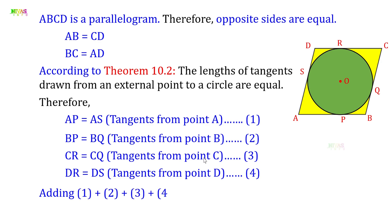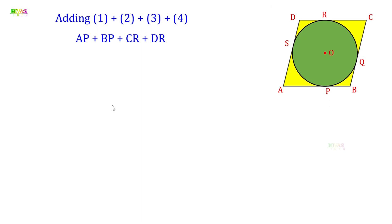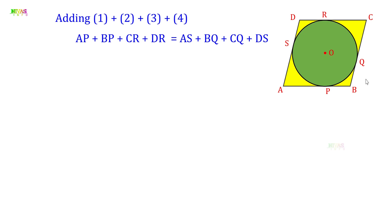Adding equations 1 + 2 + 3 + 4, on the left side: AP + BP = AB and CR + DR = CD. On the right side, rearranging: BQ + CQ = BC and AS + DS = AD.